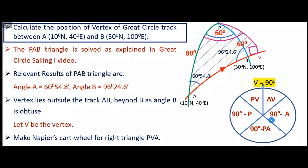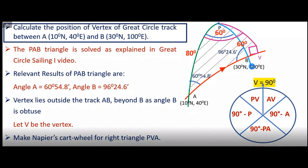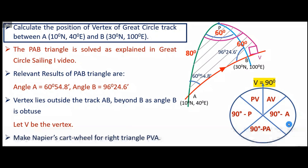The requirement is that we need to identify the known parts. Can you tell me which two things are known to us? We know side P, A and angle A. So the things known to us are side P, A — which is the co-latitude of A — and angle A from the earlier solution. In the cartwheel, 90 minus P, A is known and angle A is also known. Now we apply the Napier rule with these two known parts.